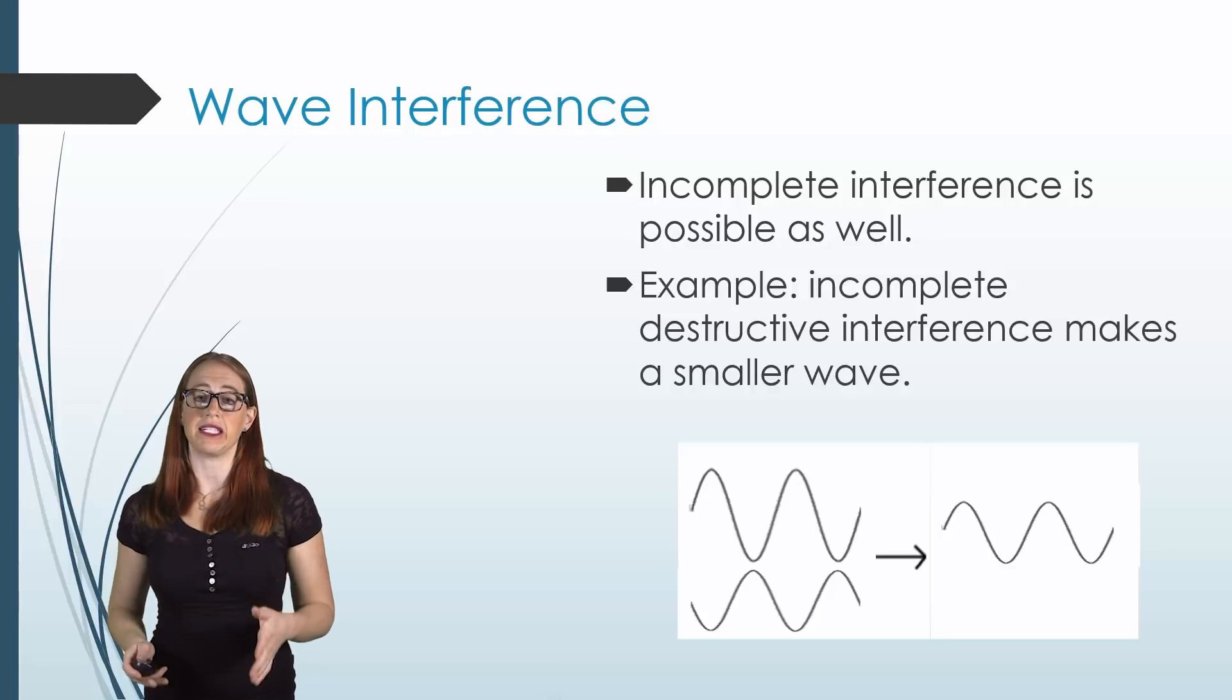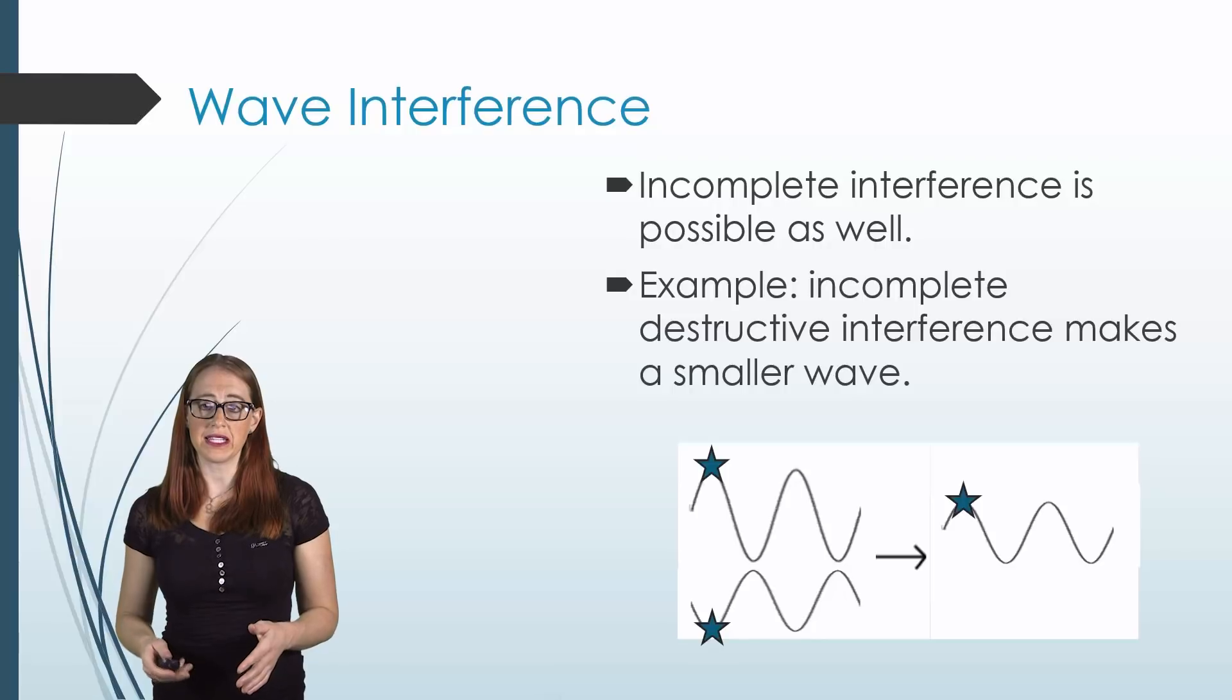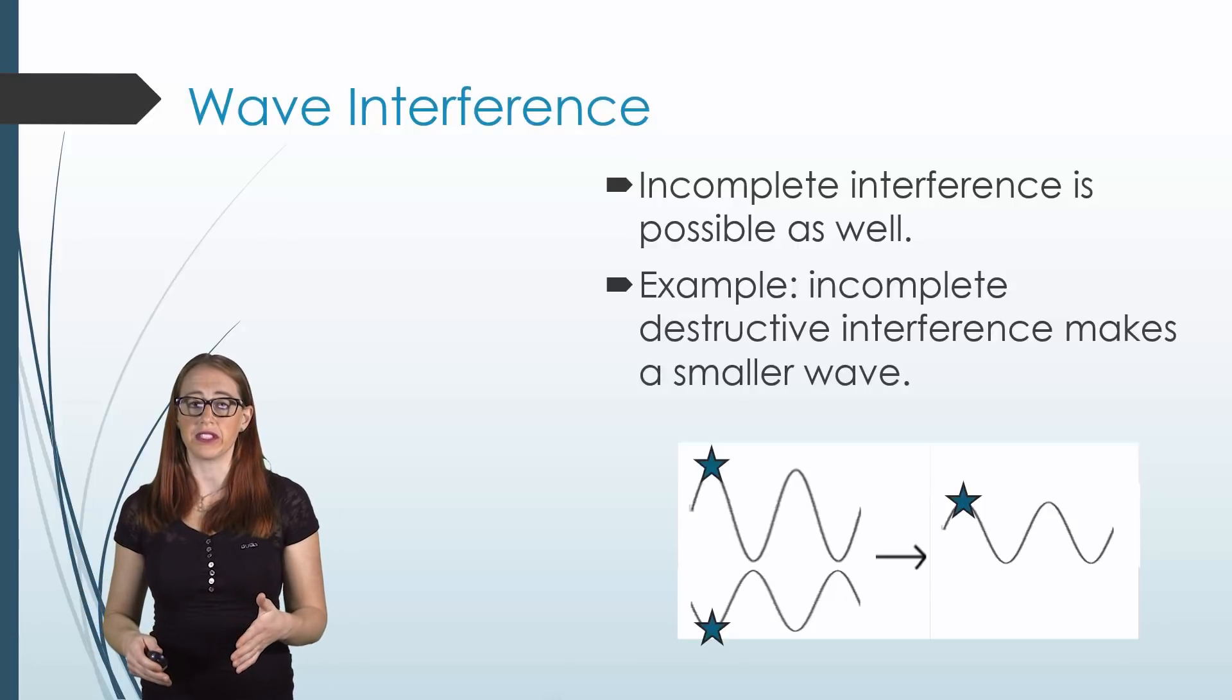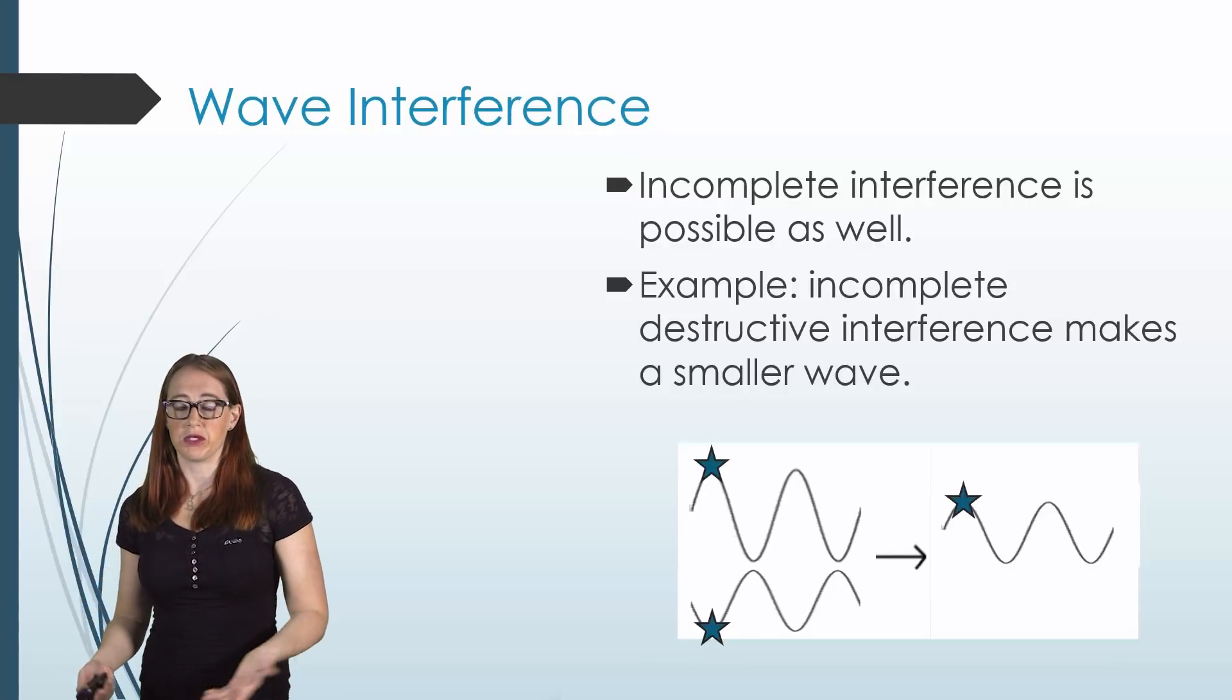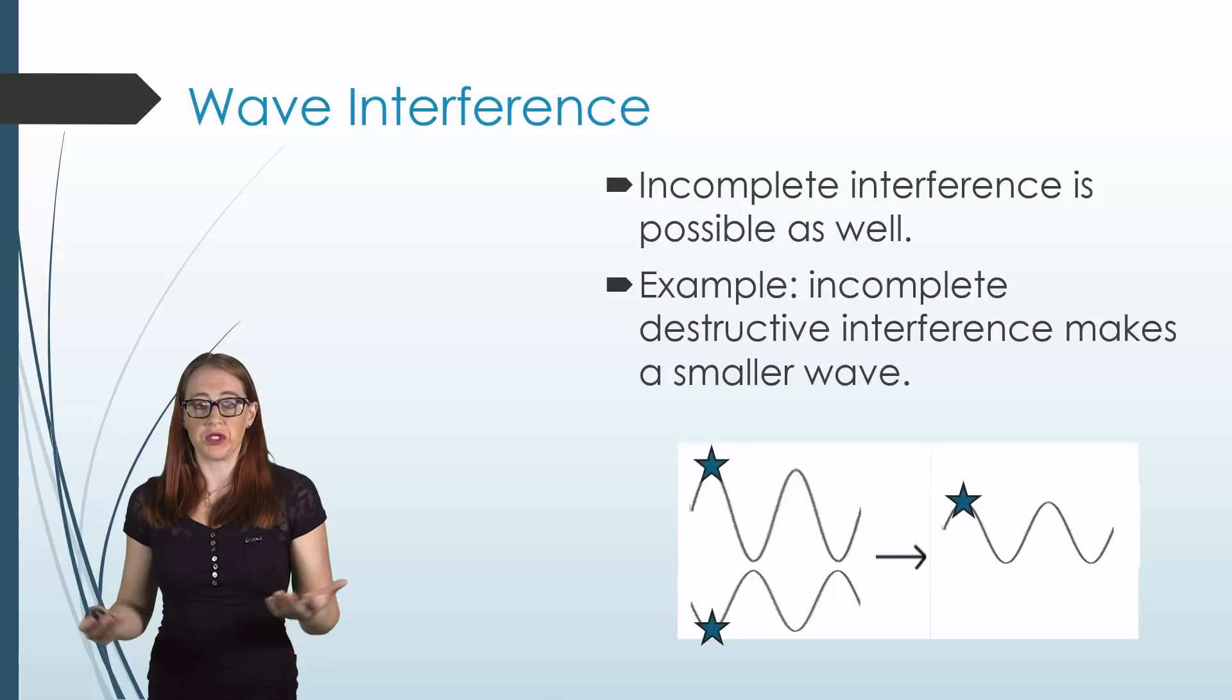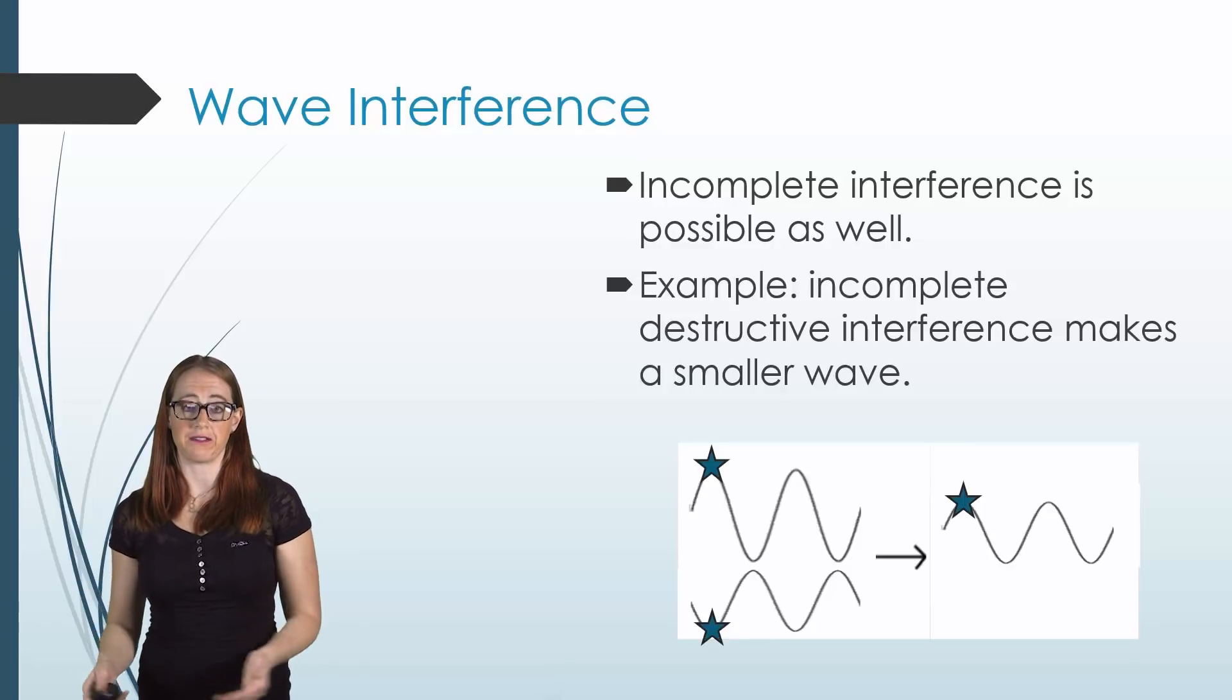It's also possible to get incomplete interference. In this example, we can see that a trough is only half as deep as the crest that it is aligned with. This means that there will still be interference, and it will still be destructive, but our final wave will still have a peak of one. If we arbitrarily were to call the top peak two and the bottom trough a negative one. Of course, you could pick any numbers for these, but ones are easy to add. This can also be both constructive and destructive, or both depending on the phase.